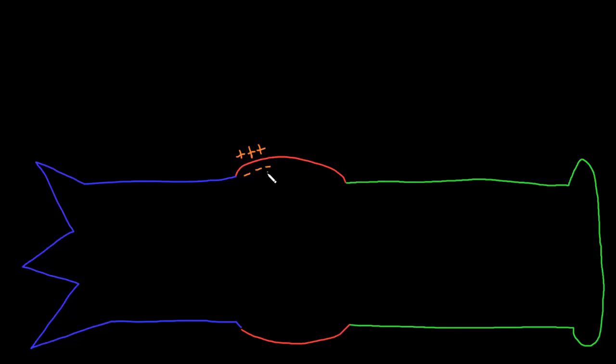Just to be clear, there is a mix of anions and cations on both sides of the membrane. I've drawn plus signs on the outside of the membrane to represent that in the layer against the outside there are more cations than anions, and I've drawn negative signs on the inside to represent that in that layer there are more anions than cations.